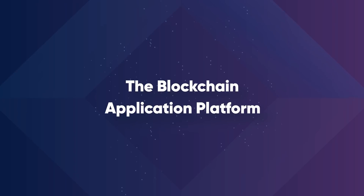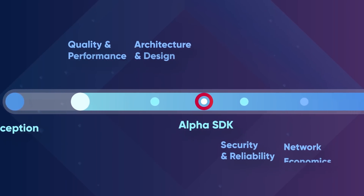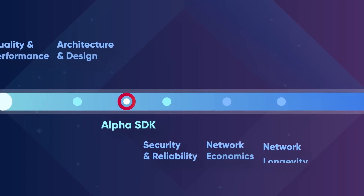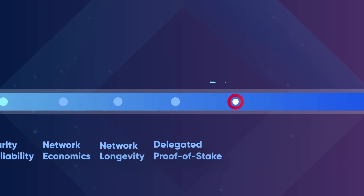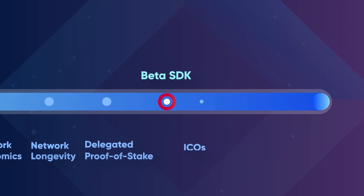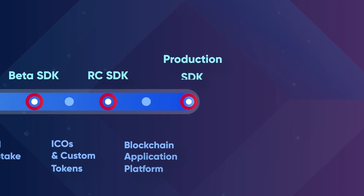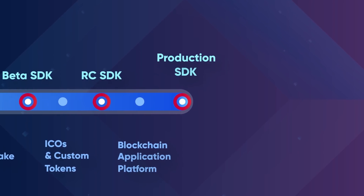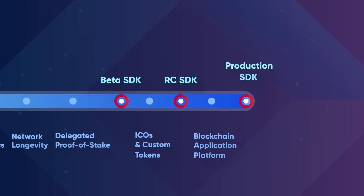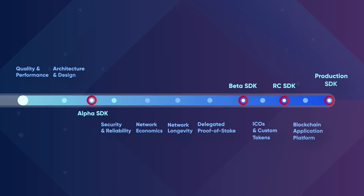The blockchain application platform establishes a bond between the LISC mainchain and its sidechains, and allows trustless token transfers to be made between chains. After the completion of this phase, we will have completed all the phases necessary to deliver a fully functioning production SDK, with our sidechain solution complete.